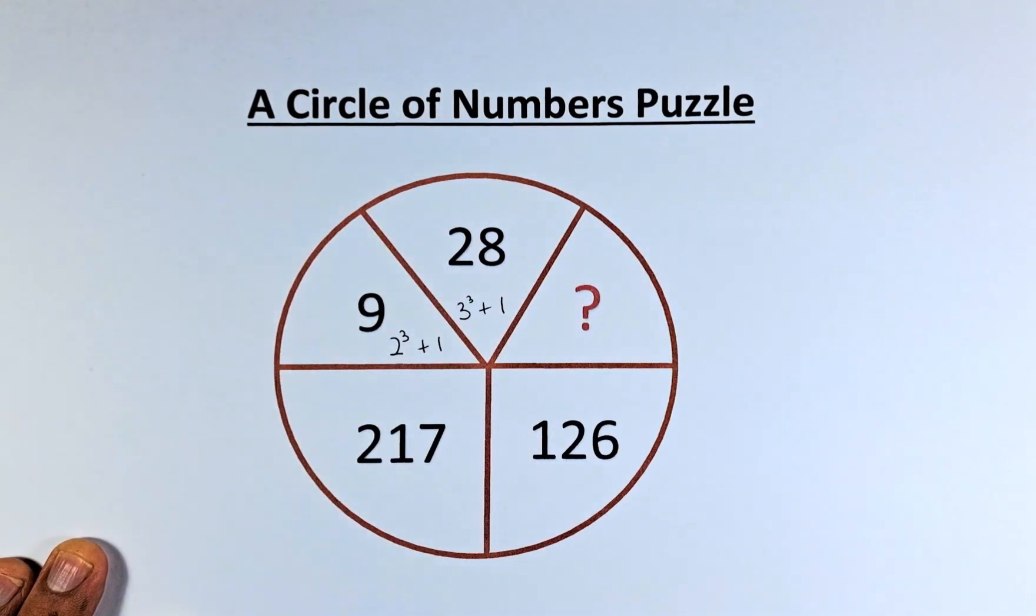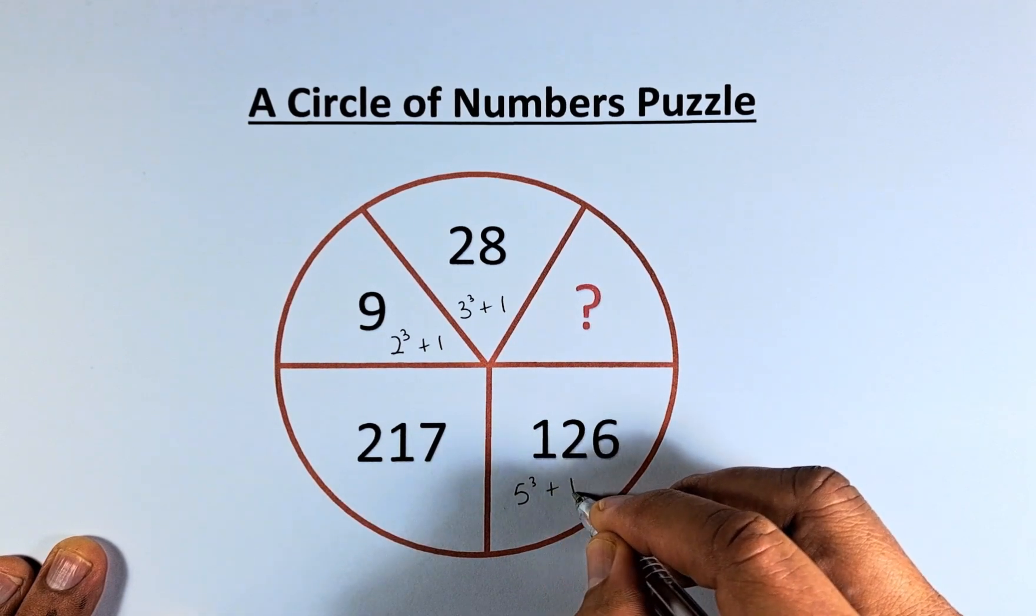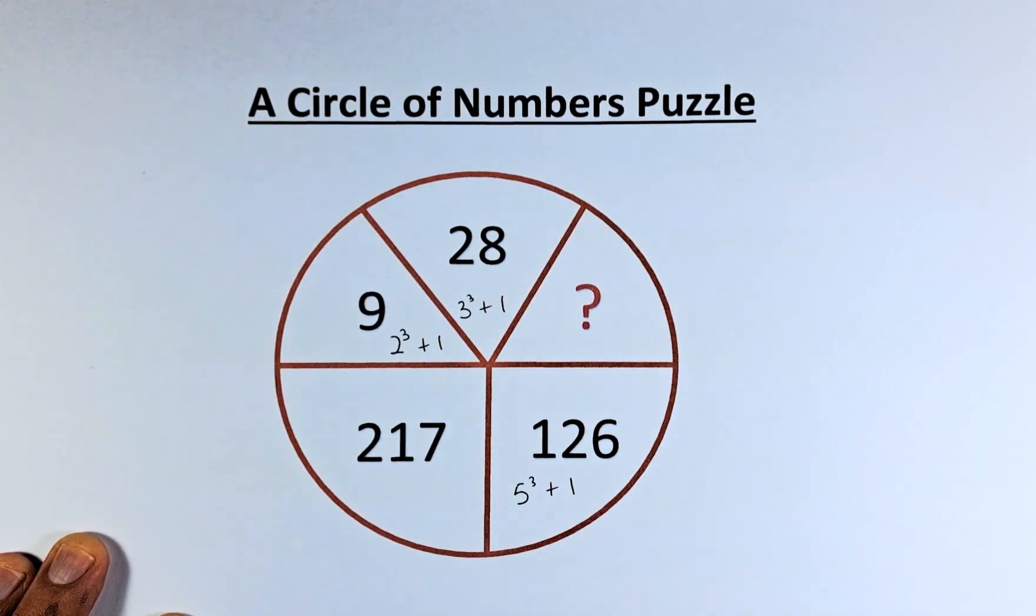So we will leave the question mark for a while. 126 is actually 5 cubed, which is 125 plus 1, that will give us 126. And last but not least,